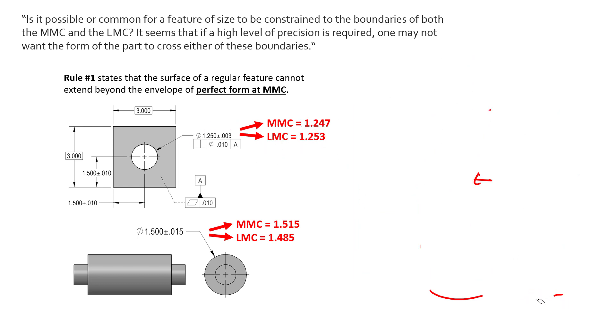So let's take a look at the external feature and see how this helps us in assembly situations as well. This external feature says our MMC is 1.515 and our LMC is 1.485.